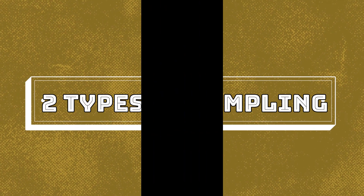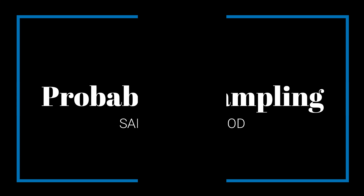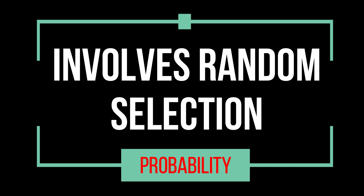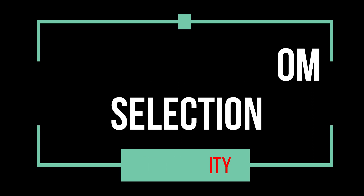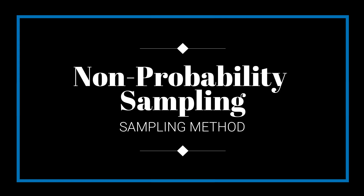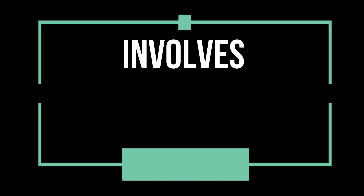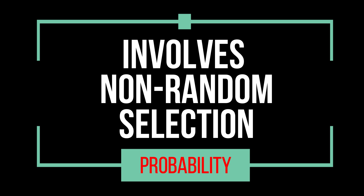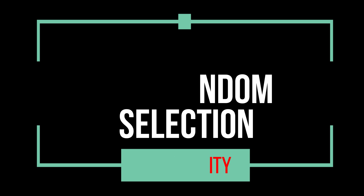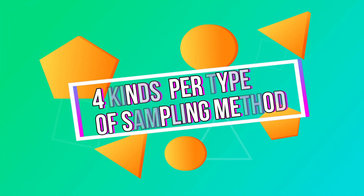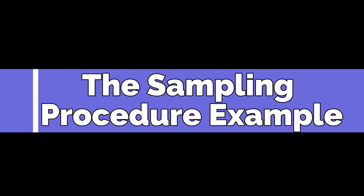There are two types of sampling methods. The first is probability sampling, which involves random selection, allowing you to make strong statistical inferences. The second is based on convenience or other criteria, allowing you to easily collect data. Under each type are four kinds of sampling, which will be discussed in another video lesson.